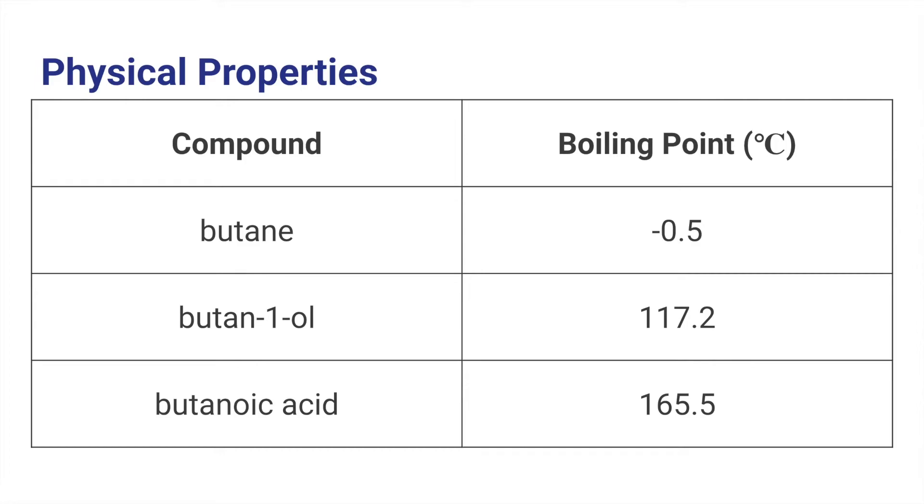In terms of their boiling points, this is kind of the data on the boiling points and you see butane, butan-1-ol and butanoic acid, they all have four carbons in them and you can see the differences in boiling point as you start adding more oxygens to it. So the alcohol is located somewhere in the middle, at 117.2 degrees Celsius. It has a higher boiling point than butane and butanoic acid has an even higher boiling point than butan-1-ol. Once again, that's because of the hydrogen bonding capabilities.